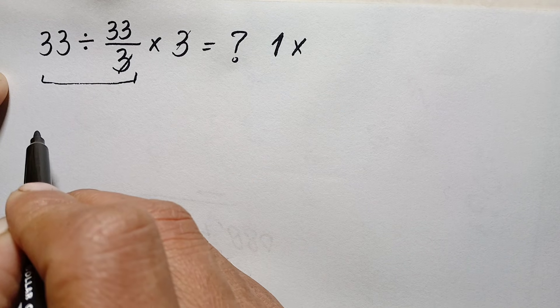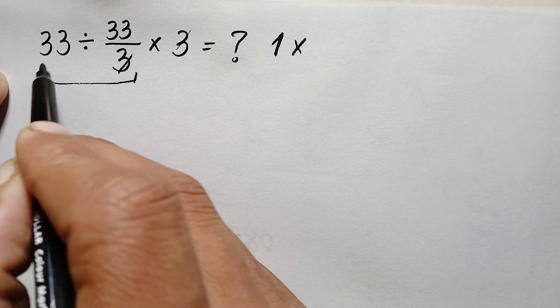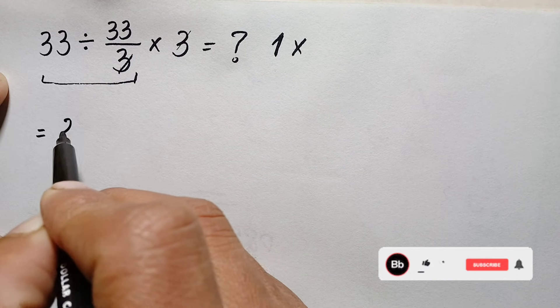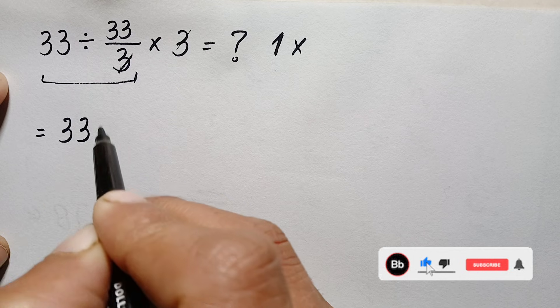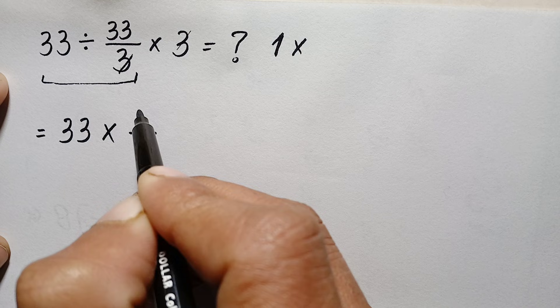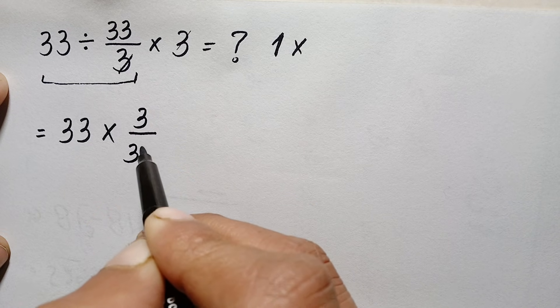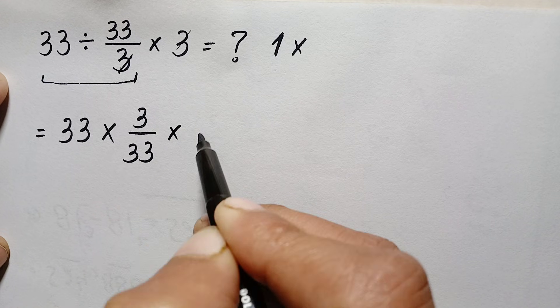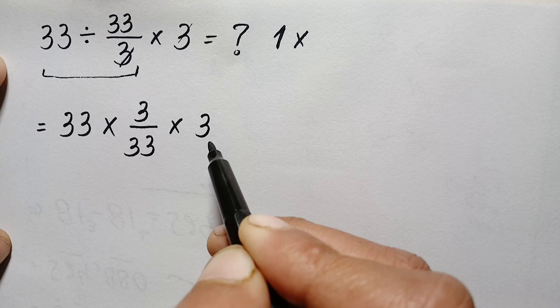To divide 33 by this number, we will apply the KCF rules. By KCF rules, we will use this first number as the same—33 will be the same. We will change the division sign to multiplication, and we will reverse this fraction. So this will become 3/33 times 3.